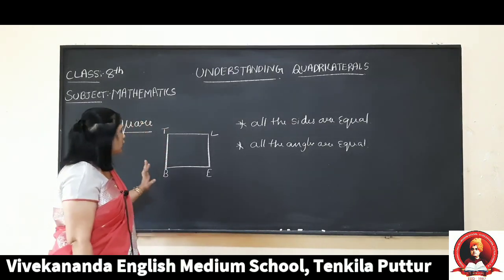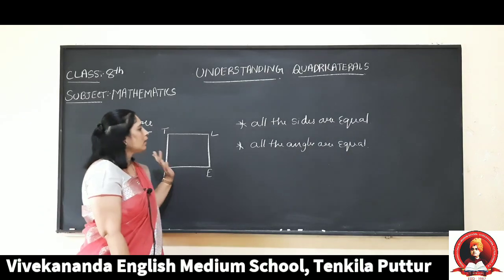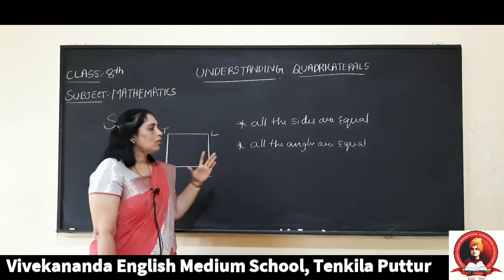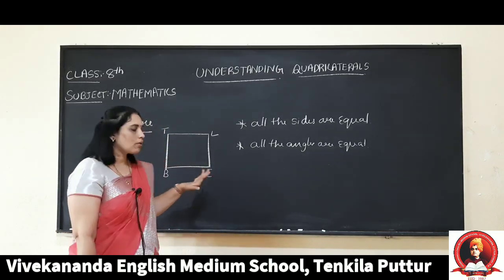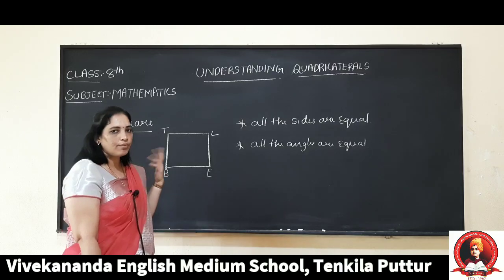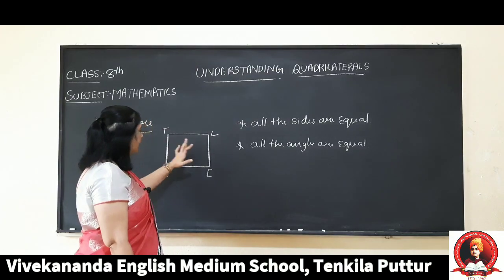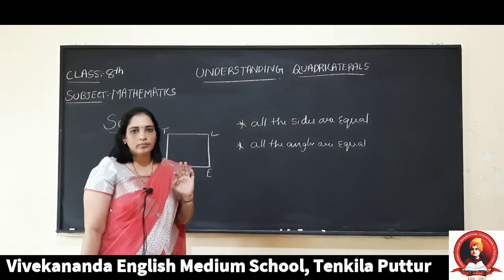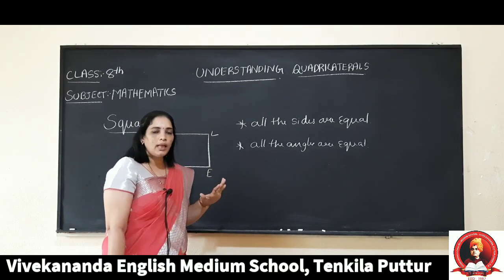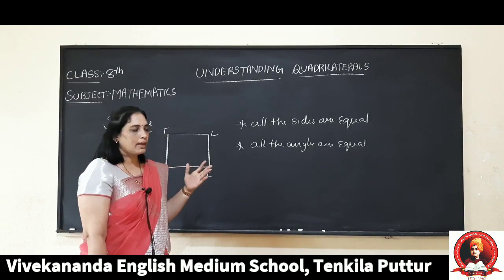The next special type of parallelogram is a square. The square has all the properties of rectangle and rhombus. All the properties of rectangle, the square also has, but here all the sides are equal. In a square, all the sides are equal and all the angles are also equal. The remaining properties are those of a parallelogram: opposite sides are equal, parallel, etc.